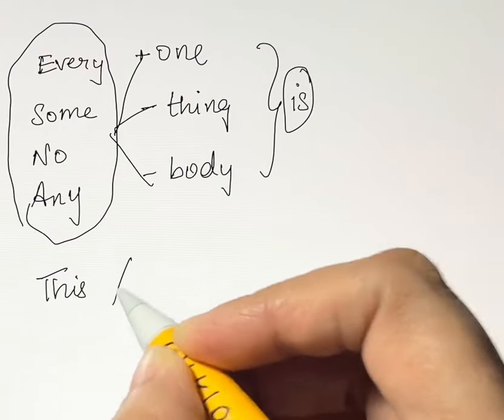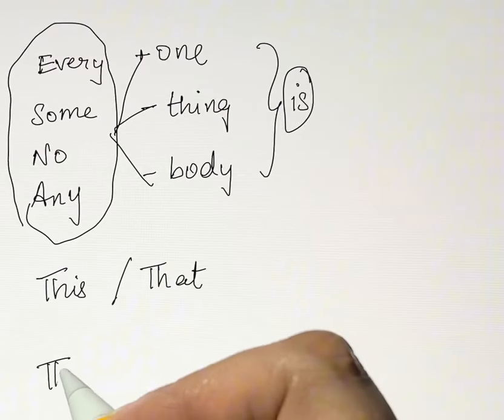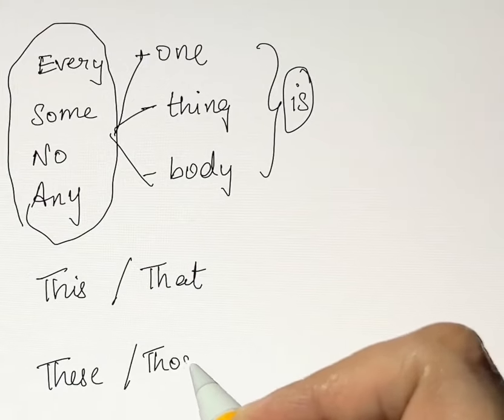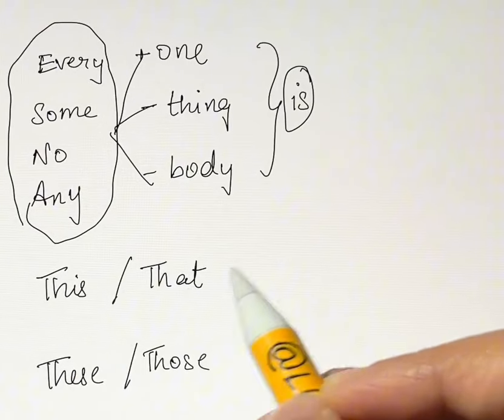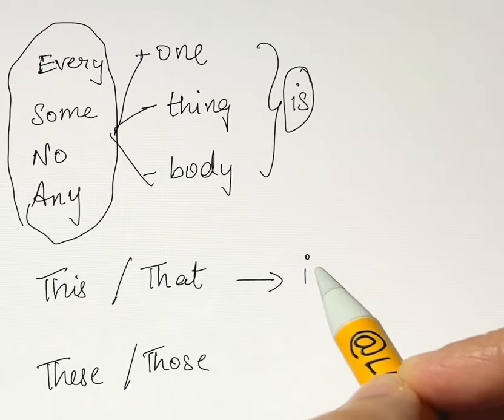Whenever you have this or that, these or those, this or that is a singular subject which takes the singular verb is.